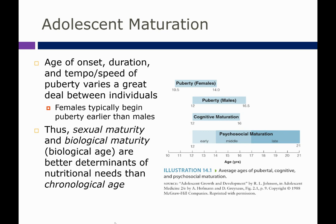The age of onset, duration, and speed of puberty varies greatly between individuals. Females typically begin puberty earlier than males, which means females can go through growth spurts earlier and actually be taller than their male counterparts. Sexual maturity and biological maturity — also called biological age — are better determinants of nutritional needs than chronological age, because if they go through puberty earlier, they'll hit their growth spurt earlier and have significantly increased nutritional needs at different stages of adolescence depending on the individual.